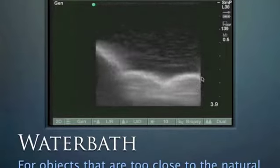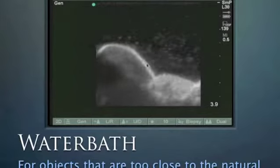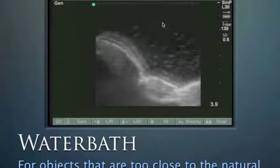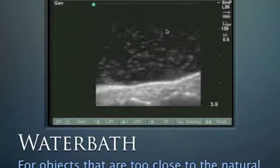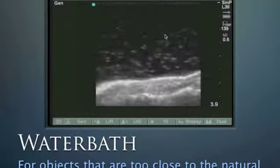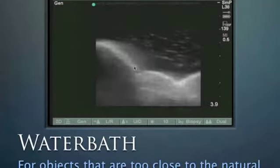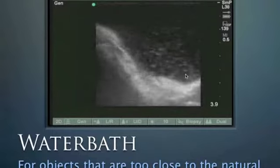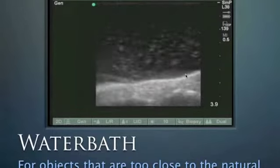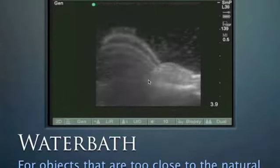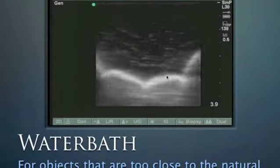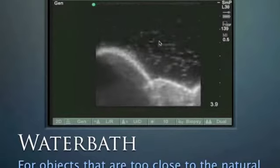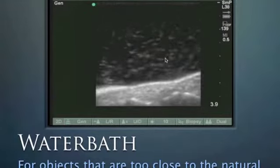This is what a water bath looks like for objects too close to the natural focal point of the transducer. Here's the palmar surface of the finger with specular reflectors — this hyperechoic snowstorm is air in the water that hasn't settled yet. As we stand away from the finger a little bit, we get very good sonography of the entire surface. The water fills in all the nooks and crannies where gel is hard to apply, giving very good visibility of all the articular surfaces.